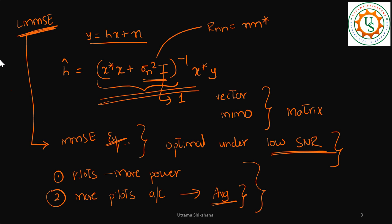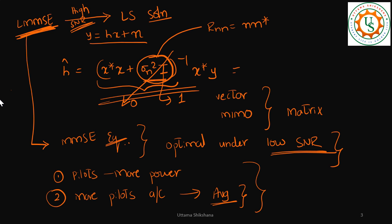When such options are available, and we already know that LMMSE actually reduces to the least square solution under high SNR — in this equation we can see that at high SNR, the sigma_n squared term goes to almost zero, and this becomes just the least square solution. So in most scenarios it doesn't make sense to apply the LMMSE algorithm to channel estimation, because we have sufficient options to boost up the SNR, and at higher SNR the least square estimation itself gives very good channel estimation.